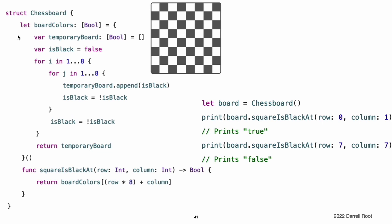The boardColors array is initialized with a closure to set up its colored values. Whenever a new Chessboard instance is created, the closure is executed, and the default value of boardColors is calculated and returned. The closure calculates and sets the appropriate color for each square on the board in a temporary array called temporaryBoard, and returns this temporary array as the closure's return value once its setup is complete. The returned array value is stored in boardColors, and can be queried with the squareIsBlackAt(row:column:) utility function.